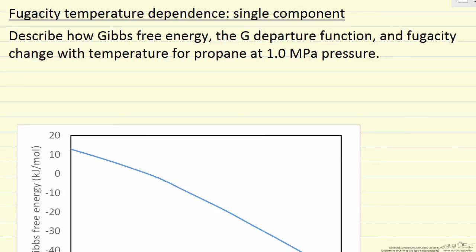We're going to use propane, keeping the pressure constant. For a constant pressure system, the differential change in Gibbs free energy—let's look at the general form—is VdP minus SdT.